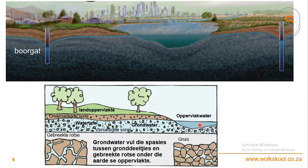Die oppervlakwater gaan die damme en riviere aanvul. Dit is een van die redes waarom ons damme wil bou, sodat die rivier met al sy water nie sommer net na die see vloei nie. Die grondwater en die watertafel word gewoonlik aangevul met sagte deurdringende reën, en dit beweeg, dit filtreer deur die laag van die grond totdat dit uiteindelik by die onderste laag - die versadigde sone - voorkom waar dit dan versamel.